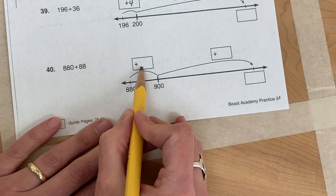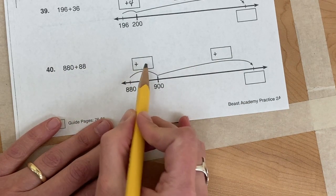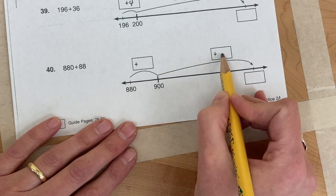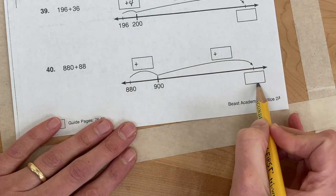So then you have to figure out, what is 88 minus this number? That's your answer here. And then you're adding 900 to whatever this number is to get your answer.